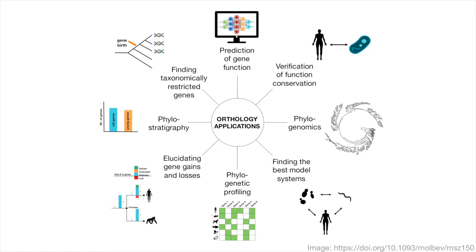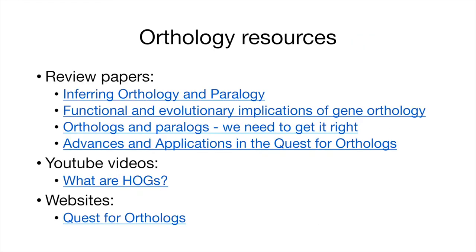Orthologues are useful to a variety of applications in genetics, genomics, cell and molecular biology, and of course evolutionary biology. Among the many applications include prediction of gene function, verification of function conservation, phylogenetics and phylogenomics, finding the best model systems to study a gene of interest, phylogenetic profiling, and elucidating a gene family's evolutionary history in terms of gene birth, death, and duplication, among others. A wide range of methods have been developed to infer orthologues, including OMA and OrthoDB. There is a lot more on orthology — if you're interested, here are some starting resources; the links are provided in the description.